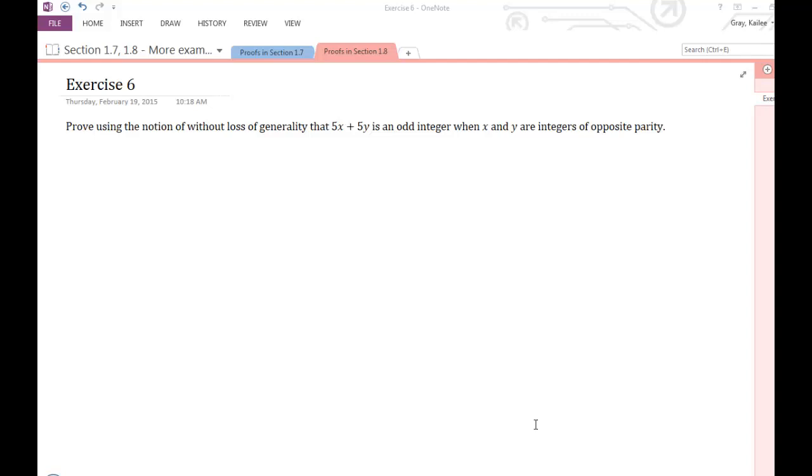In this video, I'm going to be working through a proof of the following statement. If we take any x and y that are integers of opposite parity, multiply x by 5, y by 5, add them together, we'll get an odd integer. We're also going to be talking about without loss of generality to narrow down the cases in this proof.